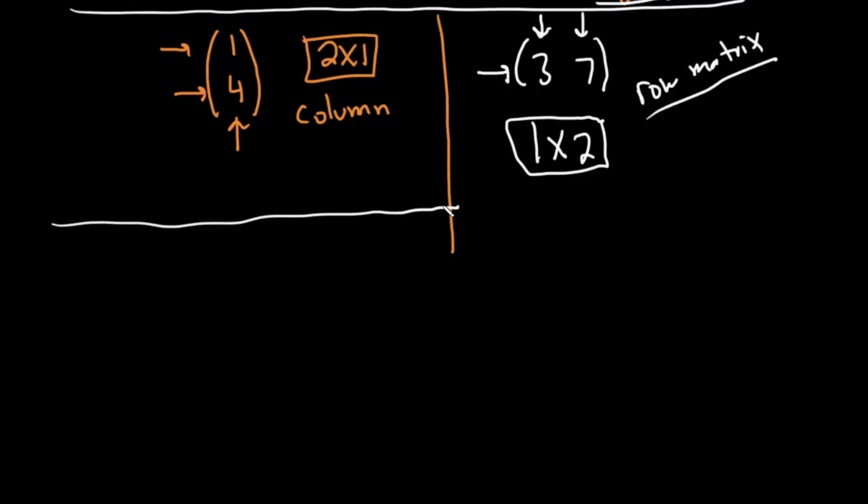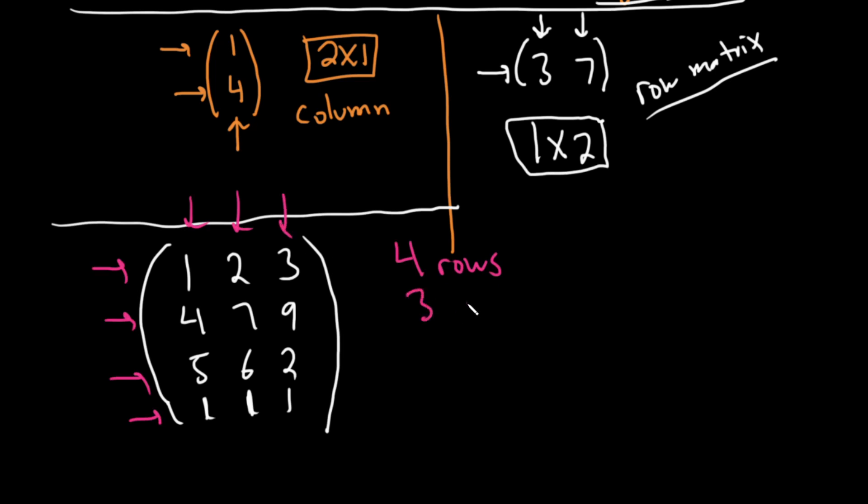And you can make matrices of all kinds of sizes. Let's look at something else. 1, 2, 3, 4, 7, 9, 5, 6, 2, 1, 1, 1. I threw in that extra row there at the end. So here we have a very big matrix, or bigger than the ones we've seen so far. So we have 1, 2, 3, 4 rows. So 4 rows. And 1, 2, 3 columns. So 3 columns. So this is called a 4 by 3 matrix. That would be the dimension of this matrix, 4 by 3.